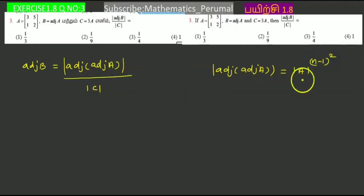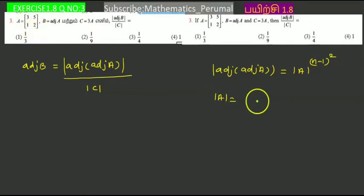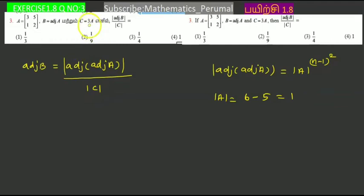We will calculate the determinant value. Here n is equal to 2 (a 2×2 matrix). So the determinant value equals 3 into 2, which gives 6 minus 1 into 5, equals 1. Then C is equal to 3A.